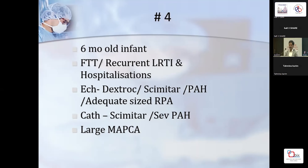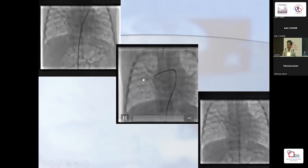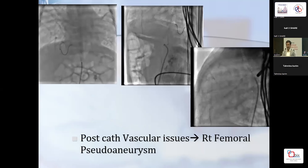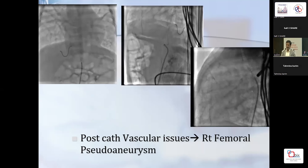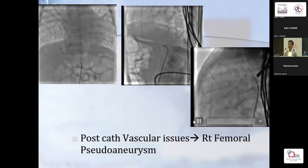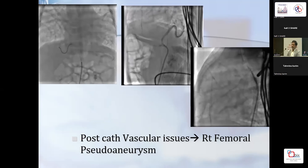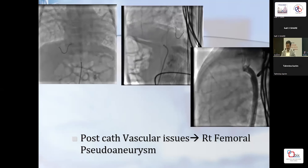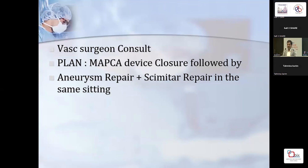A six-month-old child presented with recurrent respiratory infections and failure to thrive, referred as dextrocardia with a large MAPCА. The main pulmonary artery was quite good, right and left pulmonary arteries not too bad. We were very confident going in, but this was diagnostic angiography. We also found a tiny PDA not seen earlier. Unfortunately this child had vascular access issues with a femoral artery problem, resulting in a post-procedural complication and the procedure was not completed. The plan is for MAPCА device closure followed by anomalous vein repair and scimitar repair in the same surgical setting.